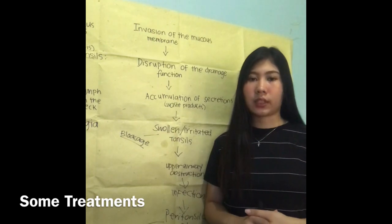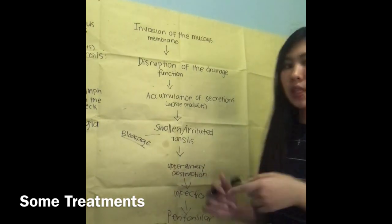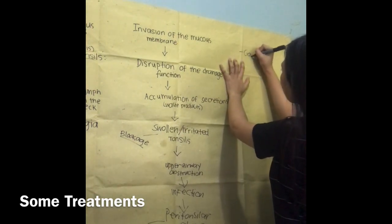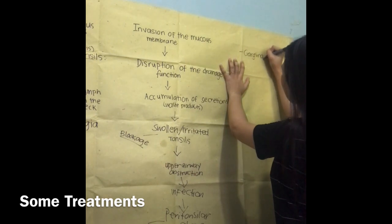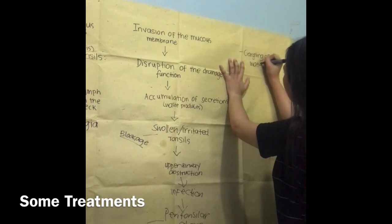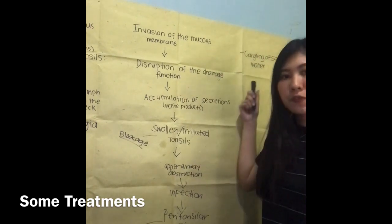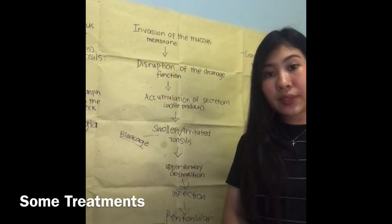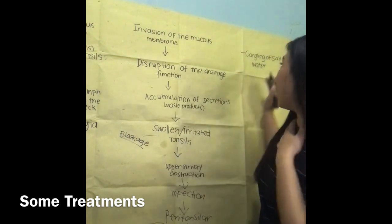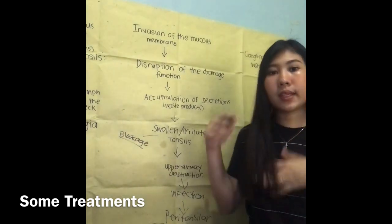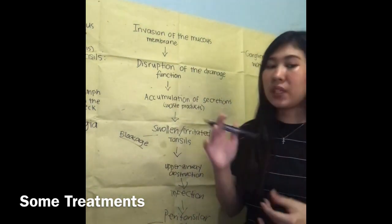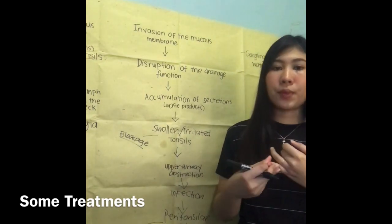Tonsillitis can be treated by, first, gargling with salt water. It is proven effective in helping to heal swollen tonsils. By doing this, it can decrease the swelling or inflammation of the tonsils, so that the patient will no longer have difficulty swallowing or breathing.